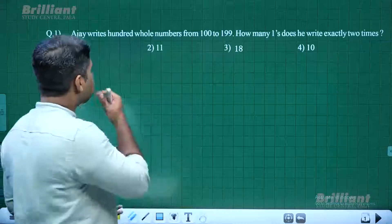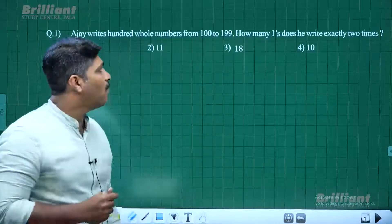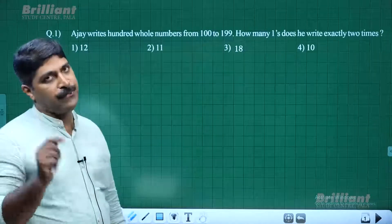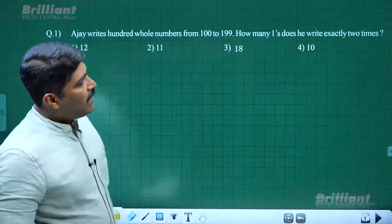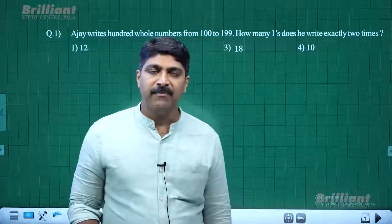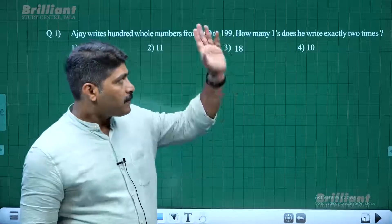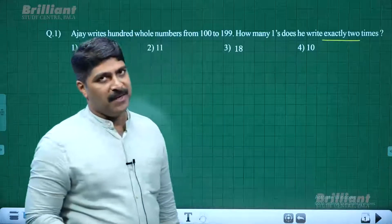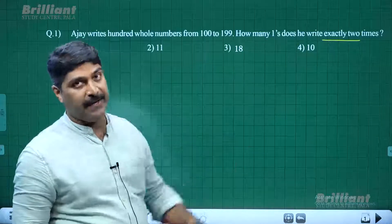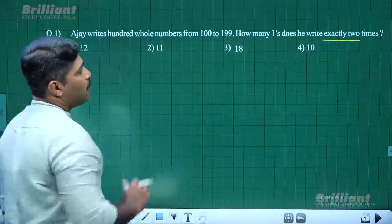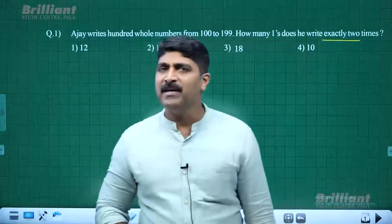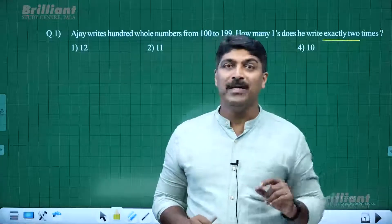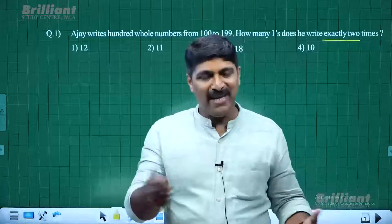Our first question: Ajay writes 100 whole numbers from 100 to 199. How many ones does he write exactly two times? There are various kinds of similar questions you can expect in competitive exams. The key point here is 'exactly two times' — not less than two or more than two.